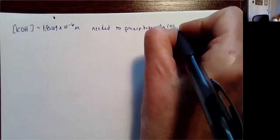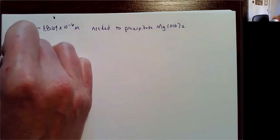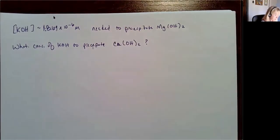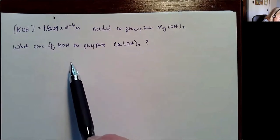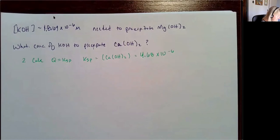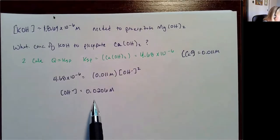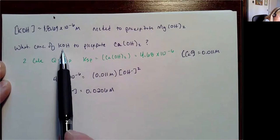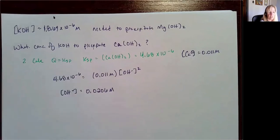I can take this one step further. At a KOH concentration of 1.869 (times ten to some power), I precipitate magnesium hydroxide. Then I want to know what concentration of KOH is needed to precipitate my calcium. I'm going to do the same calculation, only using the Ksp for calcium hydroxide, not magnesium hydroxide, with the initial calcium concentration of 0.011 M. That gives me the KOH concentration at which calcium starts to precipitate.